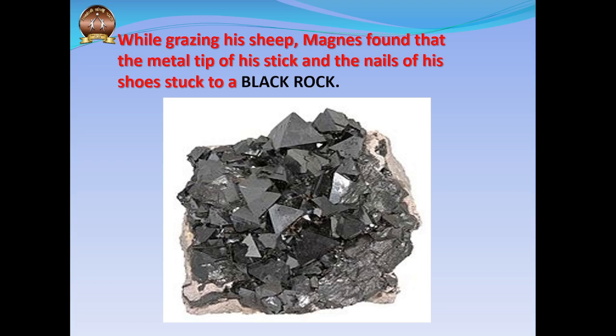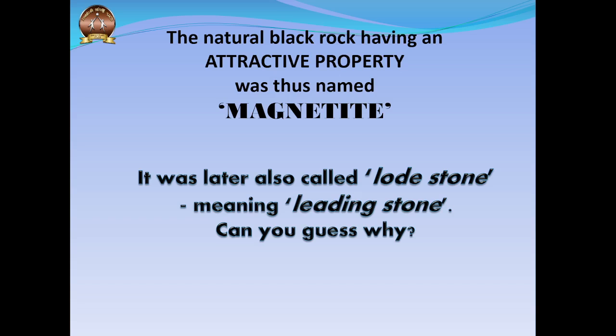This black rock is made of a material called magnetite. So Magnus found that the metal strip of his stick and the nails of his shoe stuck to these kinds of rocks. Magnetite is a natural black rock which has the attractive property associated with magnets — so magnetite is a natural magnet.